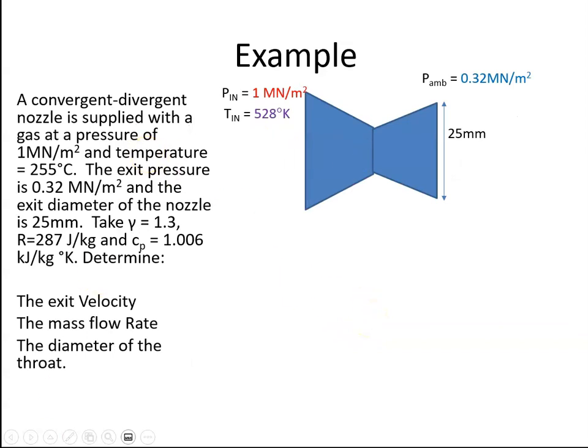So we're told it is a convergent-divergent nozzle, as we have here. We're given the pressure and temperature at the inlet, so we convert the temperature to degrees Kelvin. We're given the pressure at the exit. We don't have the temperature at the exit, so we're going to need that, and we're given the diameter of the nozzle at the exit.